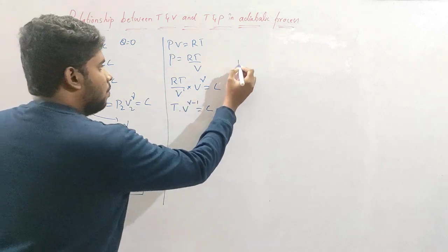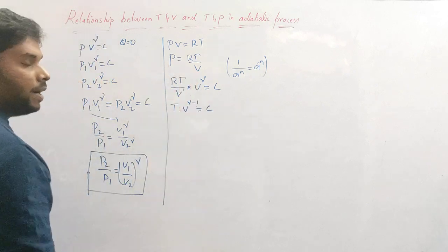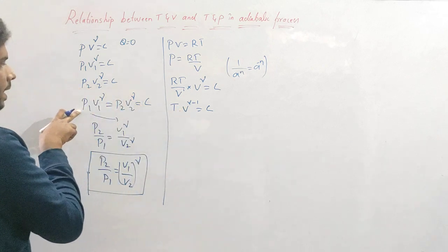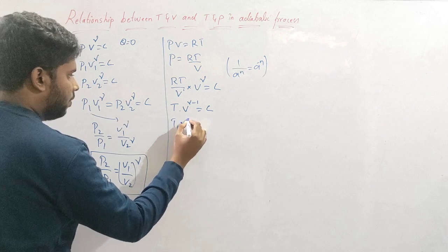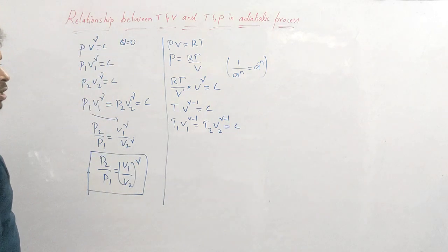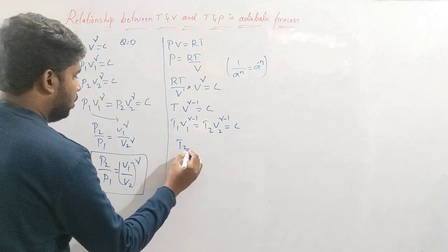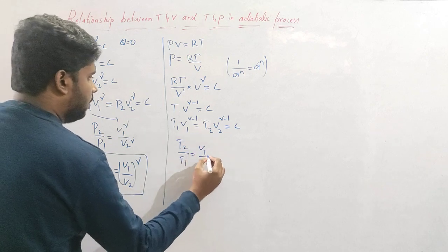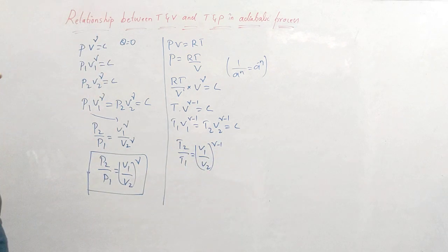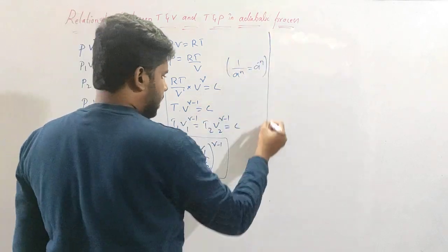Since bases are the same, adding powers: the relation is T·V^(γ−1) = constant. From this I can write T₁V₁^(γ−1) = T₂V₂^(γ−1) = constant. Rearranging, taking T₁ to one side and bringing V₂ here, I get T₂/T₁ = (V₁/V₂)^(γ−1). This is the relation between temperature and volume.